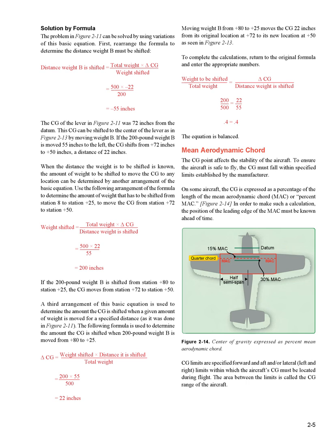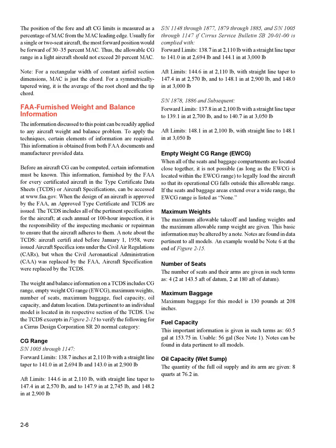In figure 2-14, in order to make such a calculation the position of the leading edge of the MAC must be known. CG limits are specified forward, aft, and/or lateral (left and right) limits within which the aircraft's CG must be located during flight. The area between the limits is the CG range. For a single or two-seat aircraft, the most forward position is typically forward of 30–35% MAC, and the allowable CG range should not exceed 20% MAC. For a rectangular wing of constant airfoil section, MAC equals the chord; for a symmetrically tapered wing, it is the average of the root chord and tip chord.